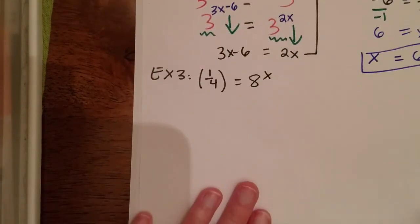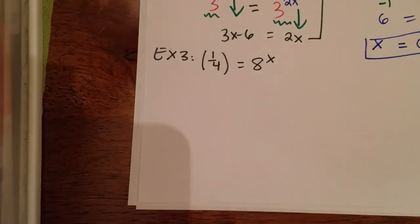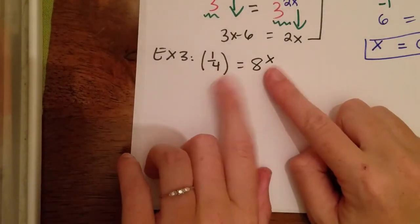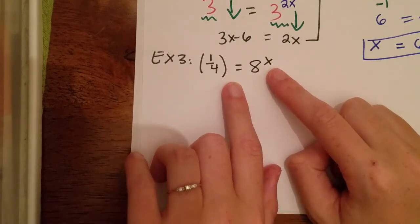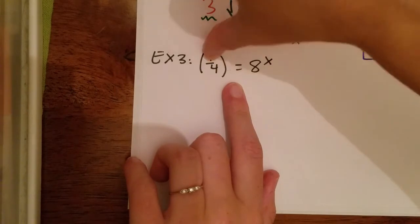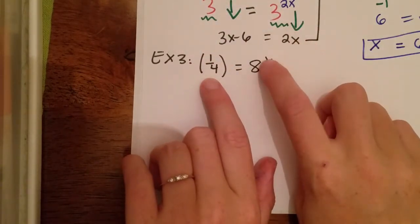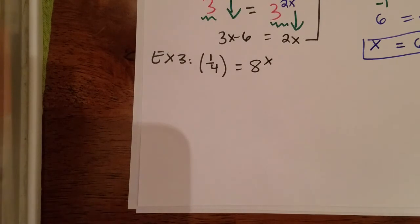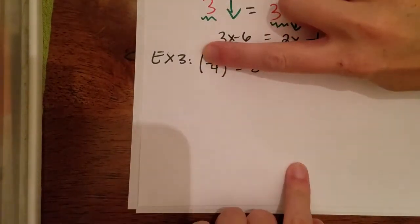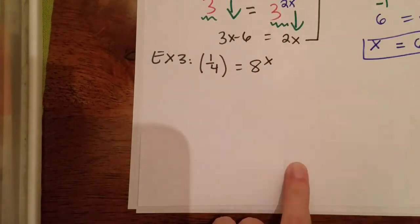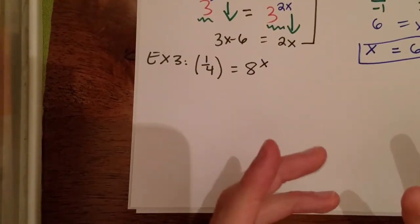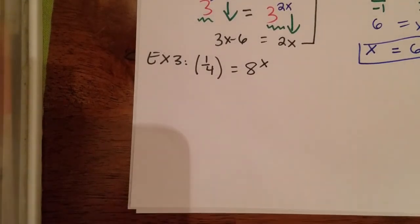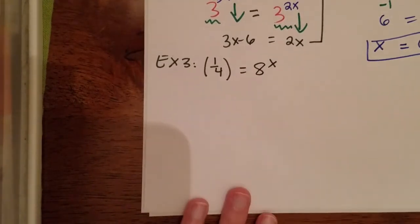Now example 3 — same idea, but we have a fraction to deal with, which we can handle. The first step is to get the same base on both sides. I'll focus on the 4 in the denominator and the 8. I need to find a number that goes into both 4 and 8 that I can raise to a power to get each. Trying 4: 4 to the first is 4, but 4 times 4 is 16, already higher than 8, so 4 doesn't work. The answer is 2.